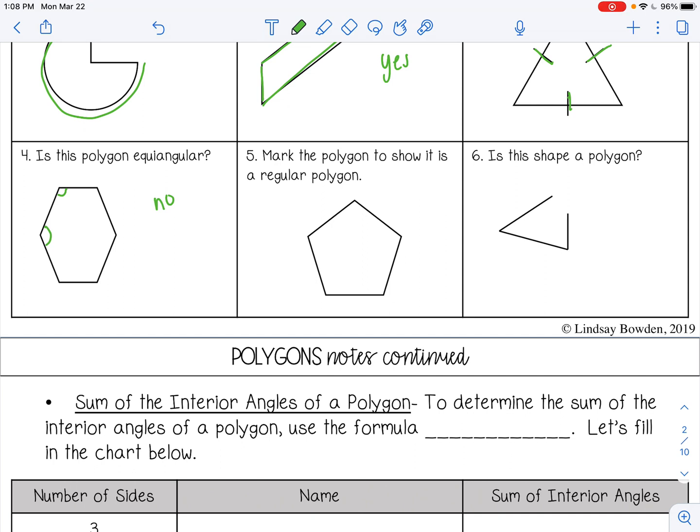Number five, mark the polygon to show that it is a regular polygon. Remember, regular means it has all equal sides and all equal angles. So for sides, we're going to mark with these congruency marks. For angles, you put a little angle congruency mark. So this is a regular polygon.